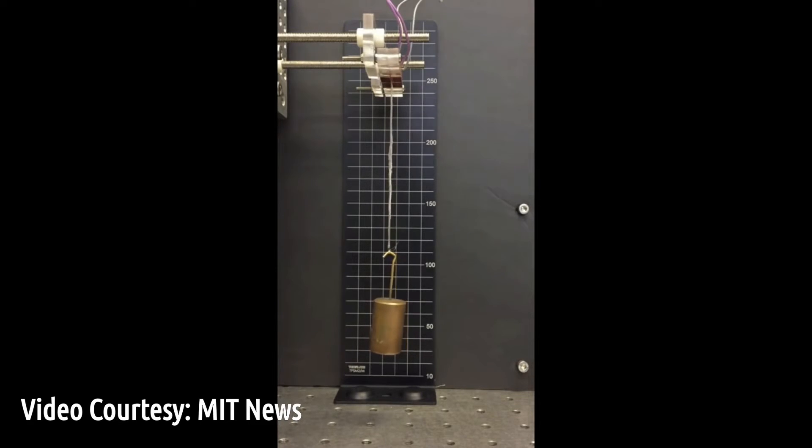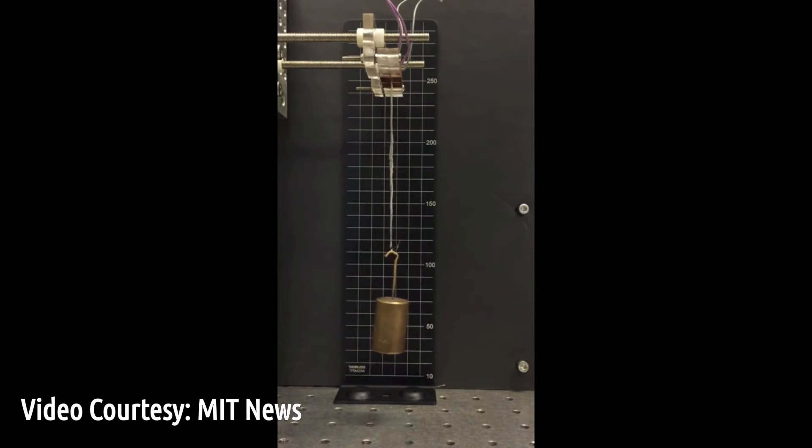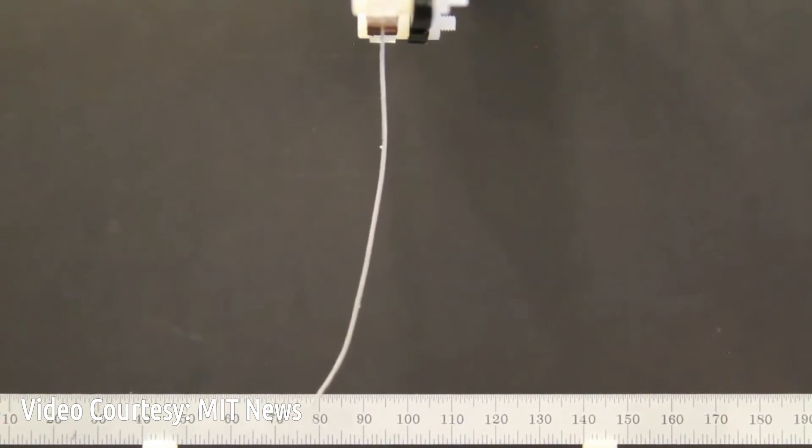However, now a group of MIT researchers have come up with one of the simplest and lowest cost systems yet, in which a material reproduces some of the bending motions that natural muscle tissues perform regularly. The key ingredient? Nylon fiber.